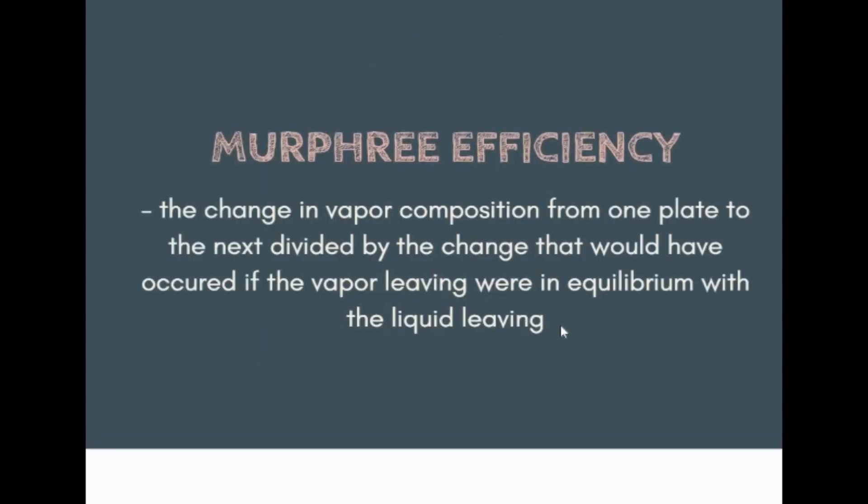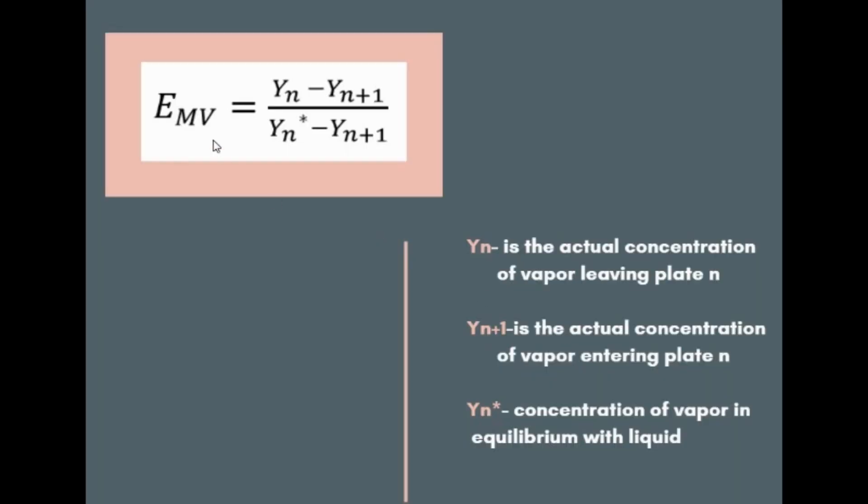Formally, Murphree efficiency is defined as the change in vapor composition from one plate to the next divided by the change that would have occurred if the vapor leaving were in equilibrium with the liquid leaving. In symbols we have efficiency based on vapor equals YN minus YN plus 1 over YN asterisk minus YN plus 1, where YN is the actual concentration of vapor leaving plate N, YN plus 1 is the actual concentration of vapor entering plate N, and YN asterisk is the concentration of vapor in equilibrium with liquid.